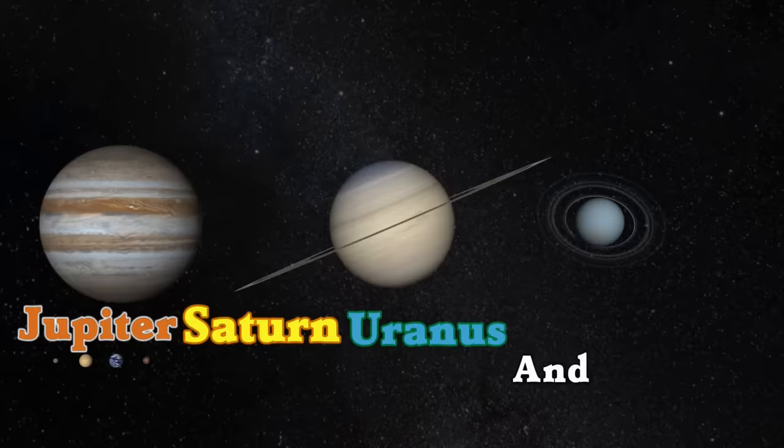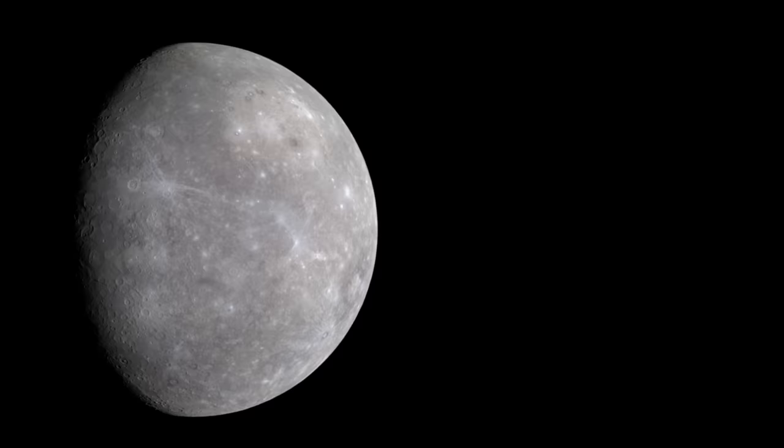Mercury, Venus, Earth, and Mars - they're the first four planets, rocky like ours. Jupiter, Saturn, Uranus, and Neptune - they're made of hydrogen and helium gas like a balloon.